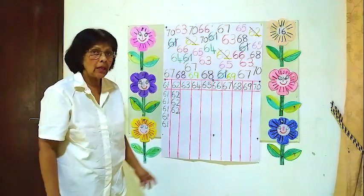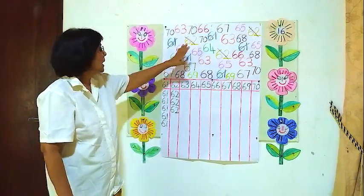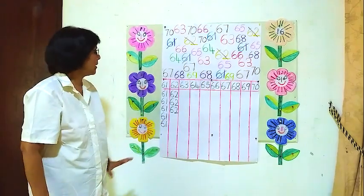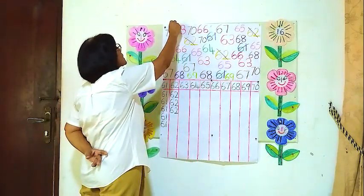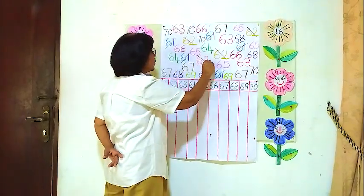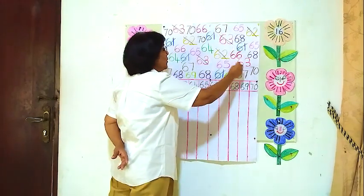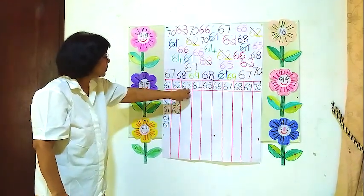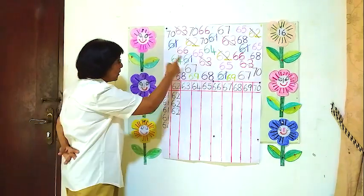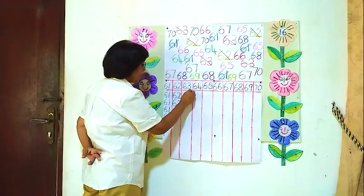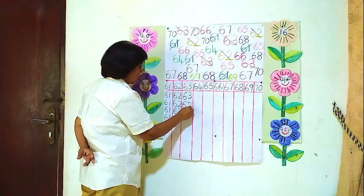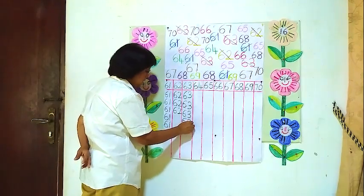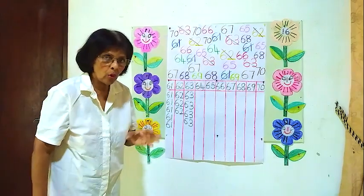Now we will see how many 63's are here. We will count and put them into the 63 column. Counting: 1, 2, 3, 4 — there are 4 63's. We will take them and put into the 63 column: 1, 2, 3, 4 — 4 63's.